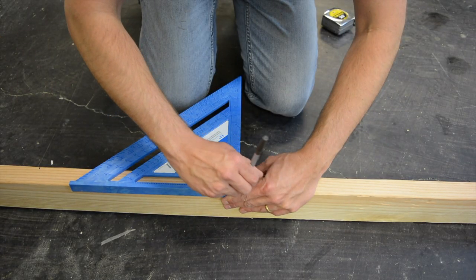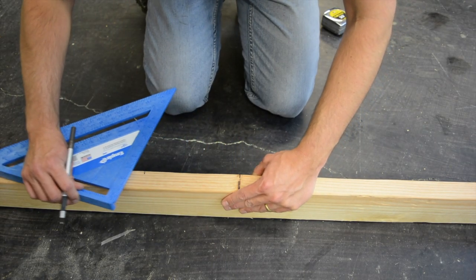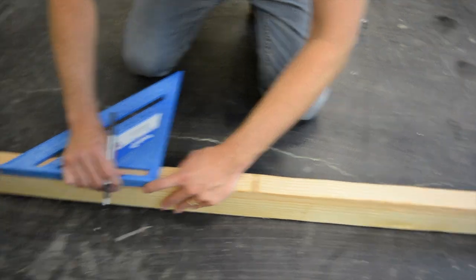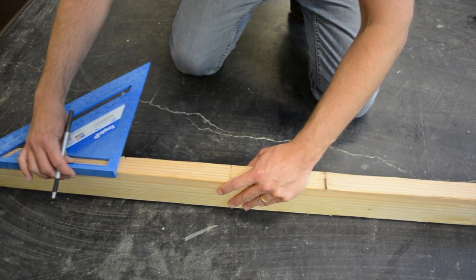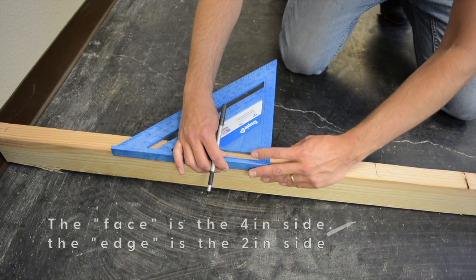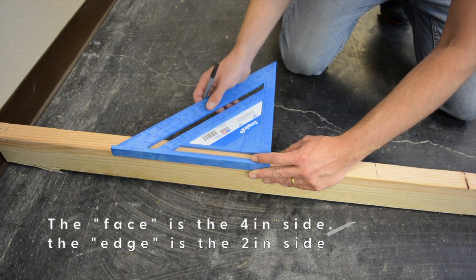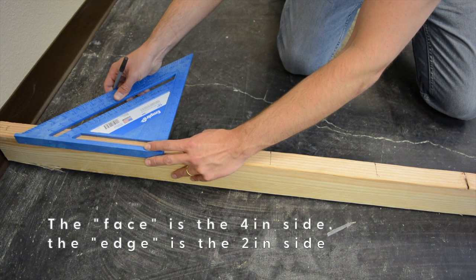Once we've made these marks on each one, we're going to use the speed square to draw a straight line across on these marks. Use the speed square on the face of the board across the edge and then draw a line on each one of our measurements.